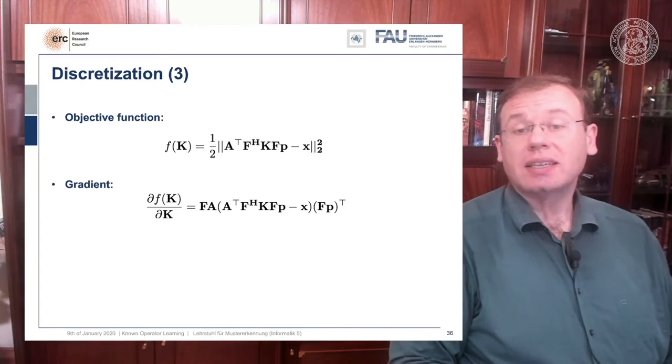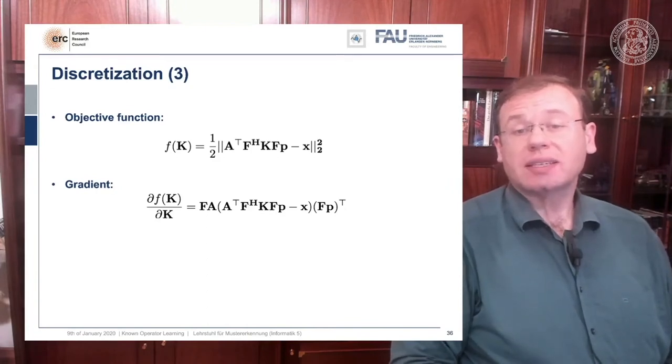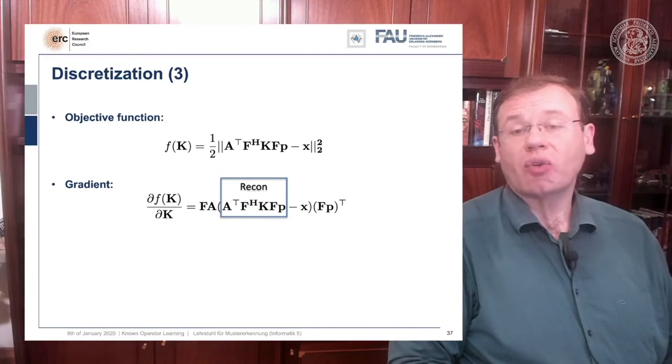If we do that we can also by hand then compute the derivative, and if you use the matrix cookbook then you get the following gradient with respect to the layer K. That would be F times A times, and then in brackets A transpose F Hermitian, our diagonal filter matrix K times the Fourier transform times P minus X, and then times F times P transpose. If you look at this you can see that this is actually the reconstruction.